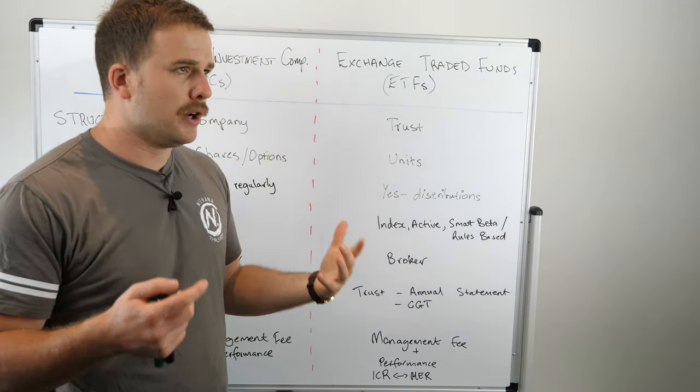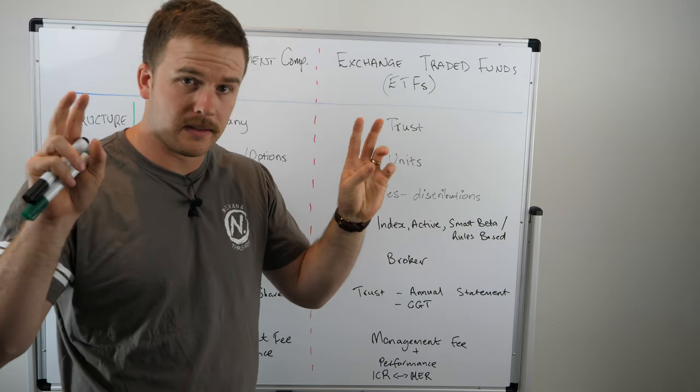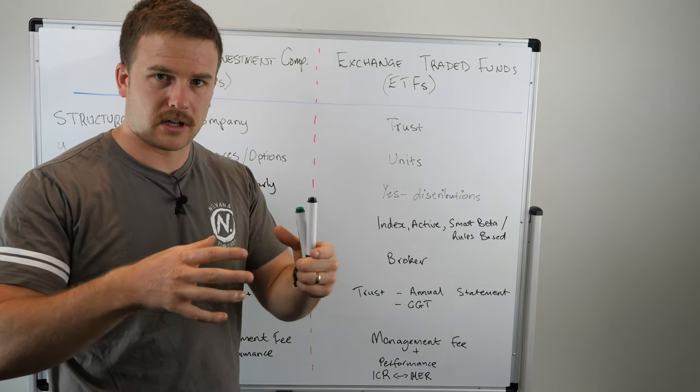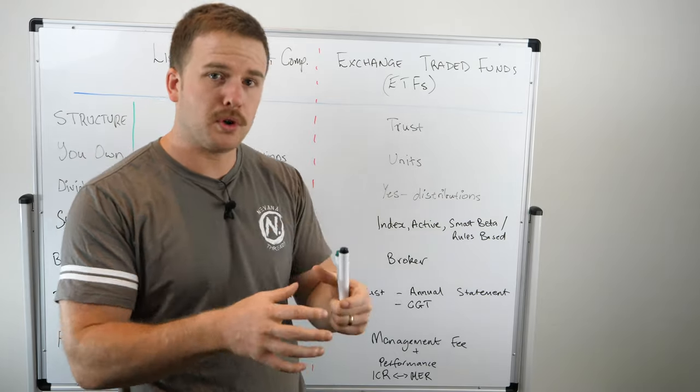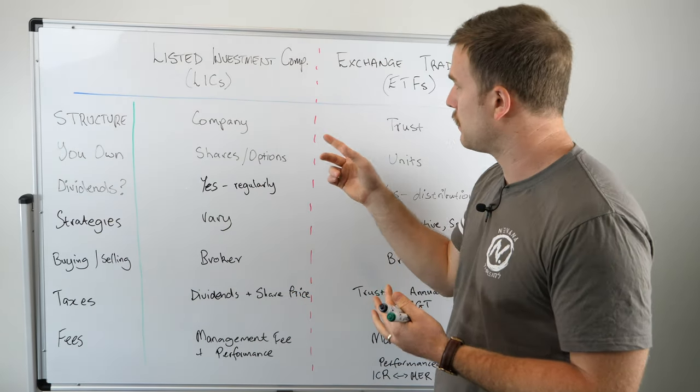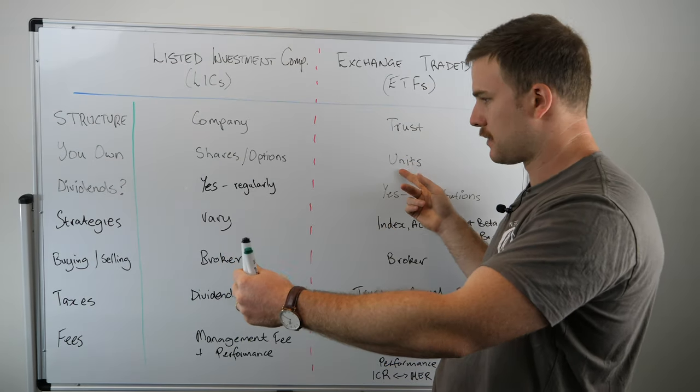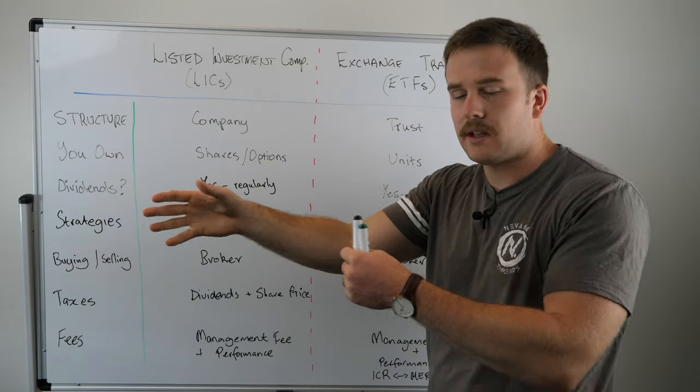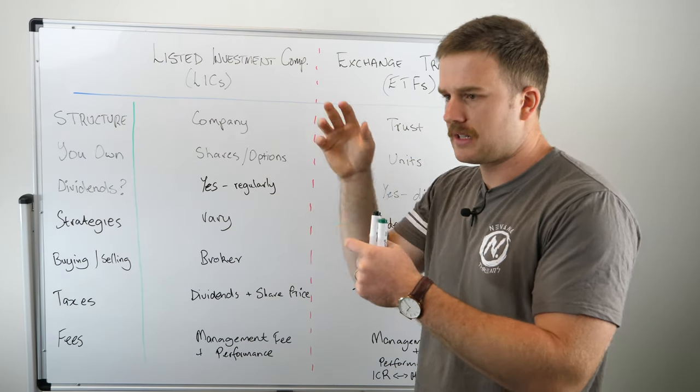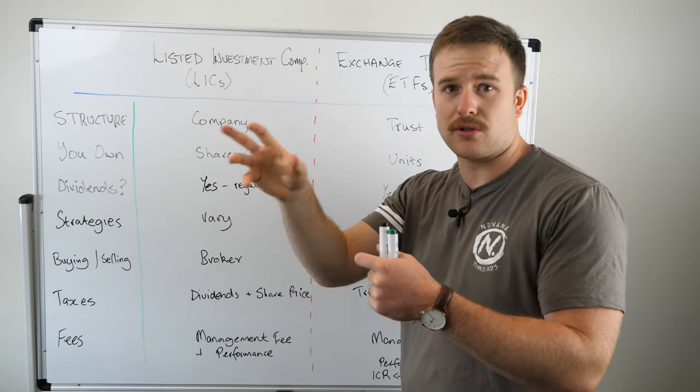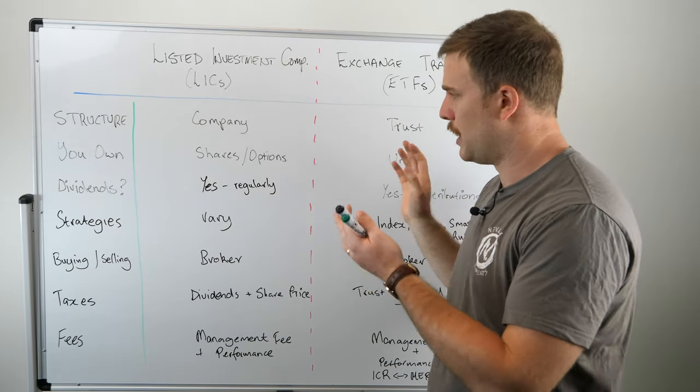In an ETF, we have a trust. A trust is slightly different. You might have heard of the word trust before because a friend of yours might have a small business and they say it's owned by the trust. A trust is simply a holding structure. It doesn't pay its own dividends, it doesn't have a board of directors. It just holds investments for you. You'll get shares in a company and units in a trust.